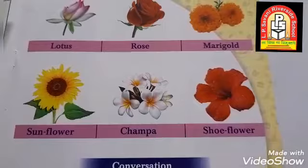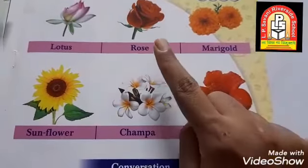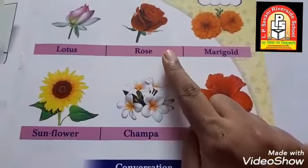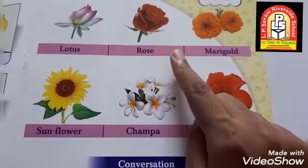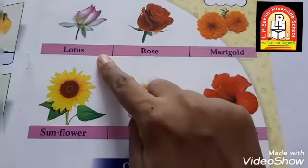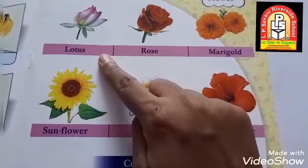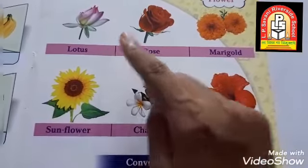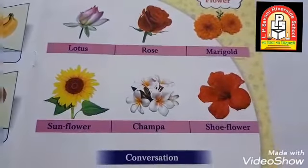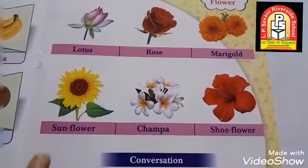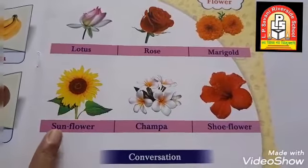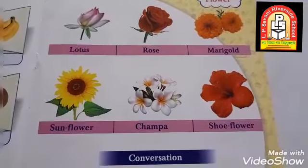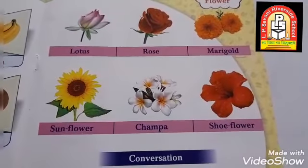Which is the king of flower? Rose is the king of flower. Sunflower always faces the sun. Okay children, let's learn the conversation.